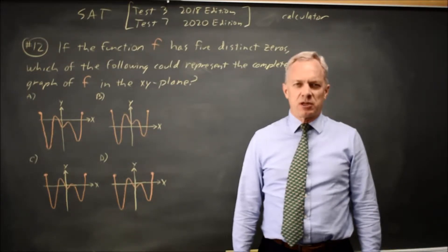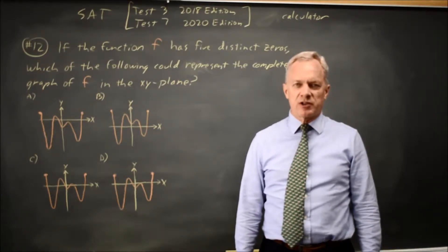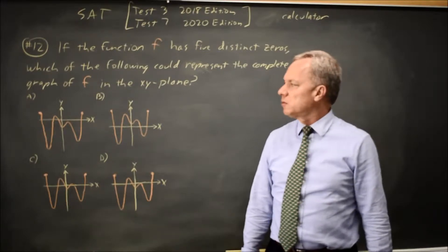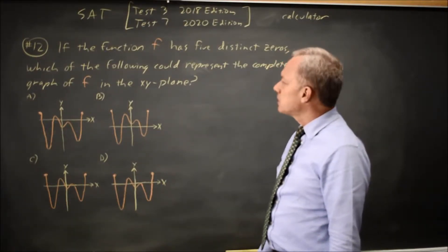This is calculator question number 12. The College Board is telling us that a graph has five distinct zeros, where zeros are x-intercepts.